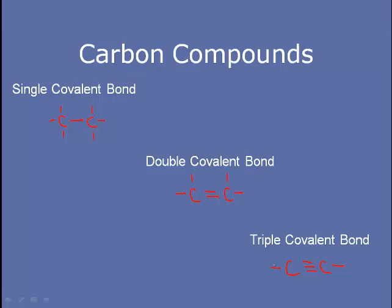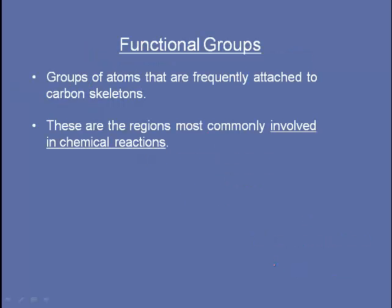You can also have single, double, and triple bonds between other atoms. It's important to note that all of these bonds are covalent bonds. Covalent bonds are strong bonds where electrons are shared between atoms, as opposed to ionic bonds where electrons are actually transferred from one atom to the other. Let's take a look at common functional groups in organic compounds. Functional groups are groups of atoms that are frequently attached to carbon skeletons. These are the regions most commonly involved in chemical reactions.